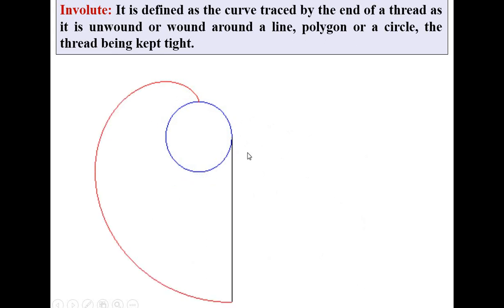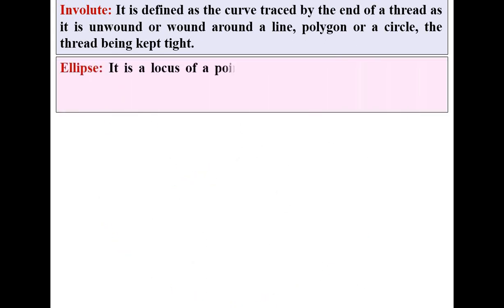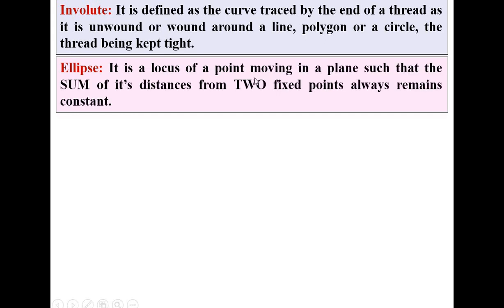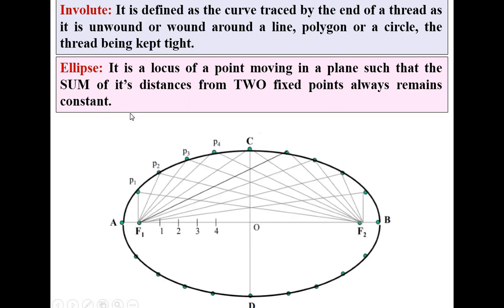Now the second definition, that is for ellipse. It is a locus of a point moving in a plane such that the sum of its distances from two fixed points, sometimes known as the foci points, always remains constant. If you look at this ellipse, these are the fixed points F1 and F2, foci points. And if you are looking for the P1 point, your P1 is moving from P1 to P2 to P3, then it is like that.